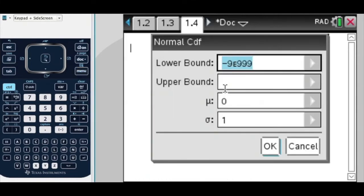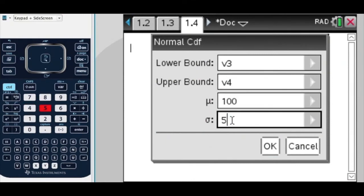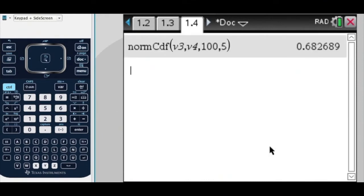Now, my lower bound, I could say, is V3. And my upper bound is V4. And my mean, again, is 100. And my standard deviation is 5.